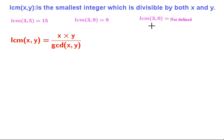From these examples it is clear what the range of LCM is. If you want to find LCM of x and y, the least possible value of LCM is max(x, y), and the greatest possible value of LCM is x times y. For example, in LCM(3,9)=9 the least value is achieved, while in LCM(3,5)=15 the maximum value is achieved.